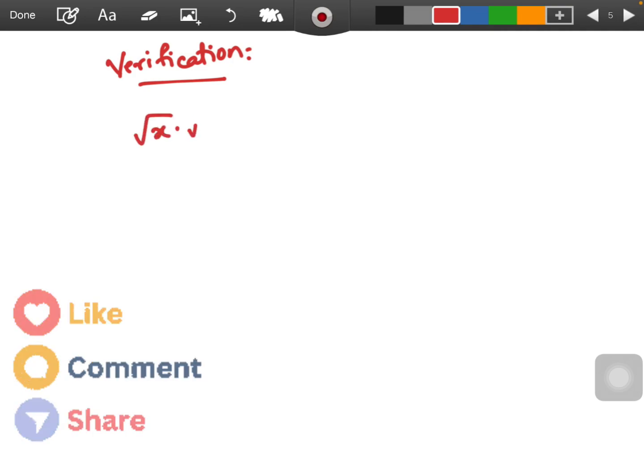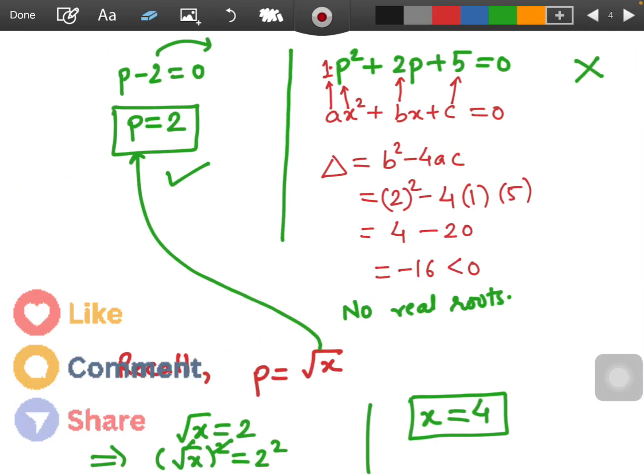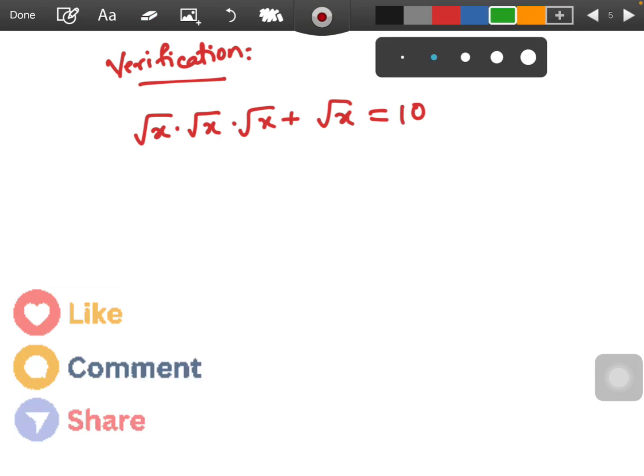Given equation is root x times root x times root x plus root x equals to 10. So ultimately when we solve left side we should obtain 10 then only it will be verified. So what value of x we have obtained here? It is 4. So let us substitute wherever there is x we are putting root 4, root 4, root 4 plus root 4 equals to 10.